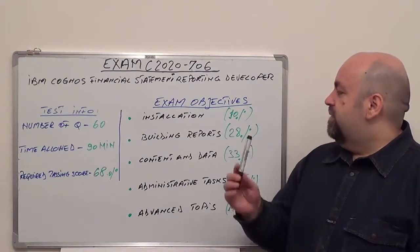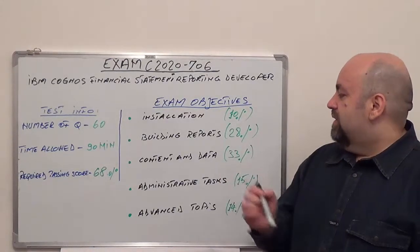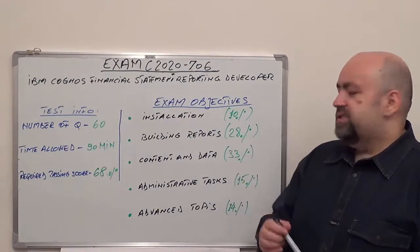The second one is Building Reports, 28% of the questions. The third one is Content and Data, 33% of the total questions.